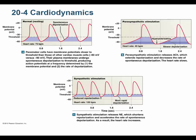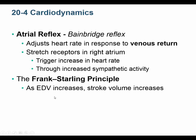At rest you're around 75 beats per minute. When parasympathetic activity slows you down, you might drop to 40 beats per minute. When sympathetic activity speeds you up, you might reach 120 beats per minute.